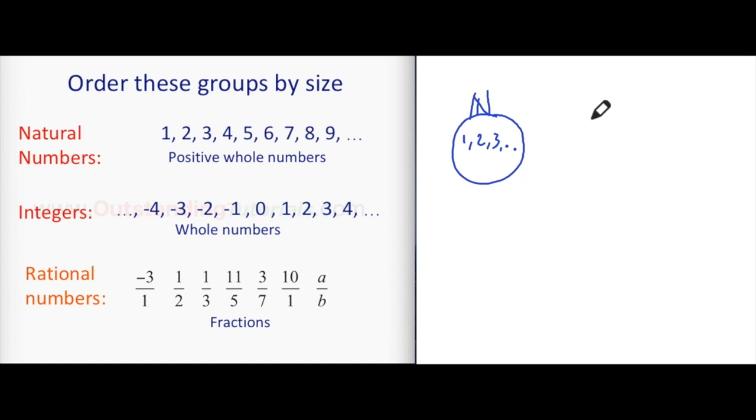Now I'm going to have another group of numbers. Let's call it the integers. The integers, it's going to have all these numbers. So one is going to be here, two, as we can see, one is in both. Two is going to be here, three is going to be here, etc. Also zero is going to be here, minus one, minus two, etc.